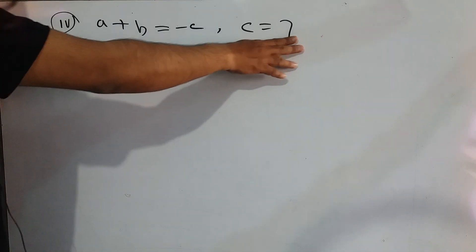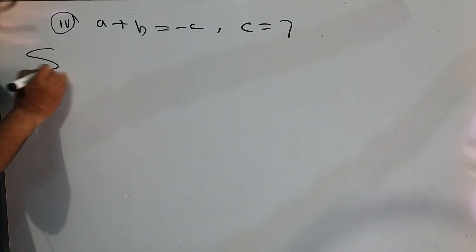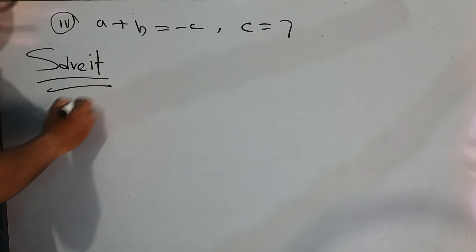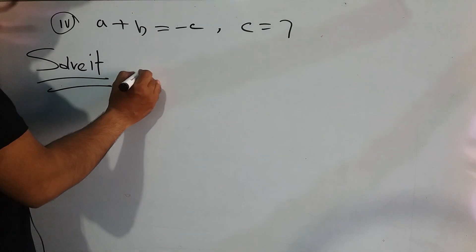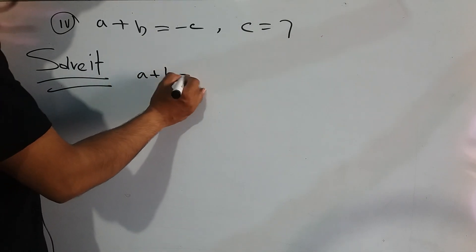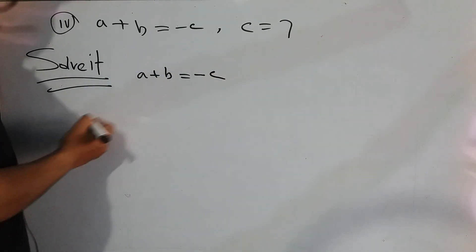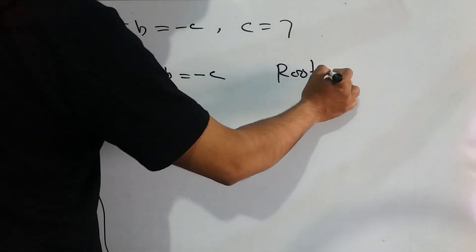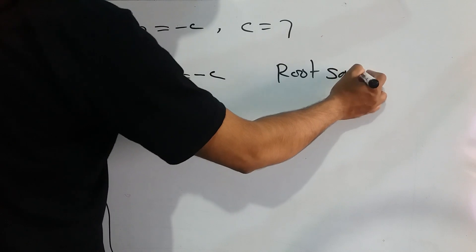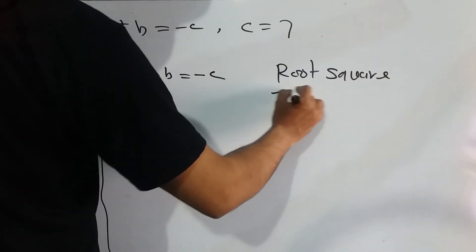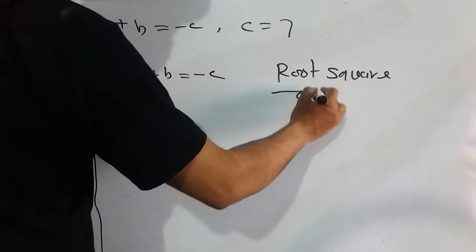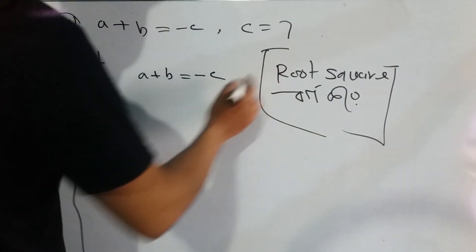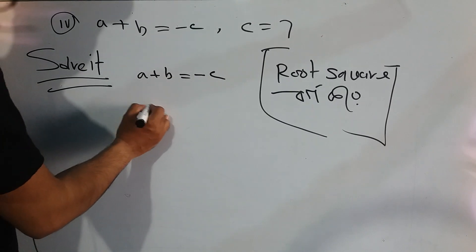We need to find the value of c. Following the solve method for this math, we can write down a plus b equals minus c and then apply the root square method.